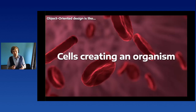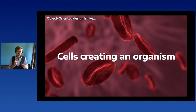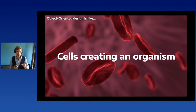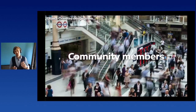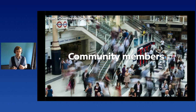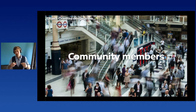Good object-oriented design is like cells creating an organism — each individual part is pretty smart. Or like community members: they cooperate, but they're still smart individually. Objects are smart when they can do something with the data they know. We'll see some examples in a moment. Another analogy: it's like actors performing a play — they cooperate to achieve the goal of performing, while each is also an individual.